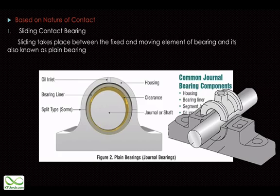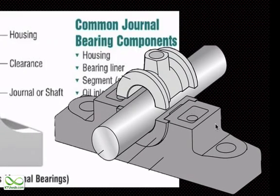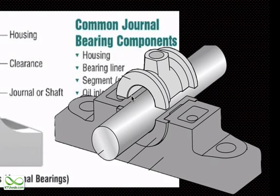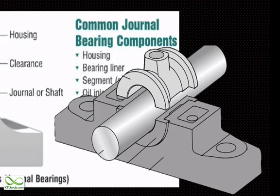This is a good three-dimensional diagram of the bearing. The bearing is as simple as a housing — you can support that housing anywhere you want, and there will be a cavity within which you can support the journal or the shaft. Here, you can see there are no spheres, cylinders, or any kind of rollers between the housing and the shaft. That means sliding takes place rather than rolling action, hence the name sliding contact bearing. Journal bearings are a perfect example of sliding contact bearing.